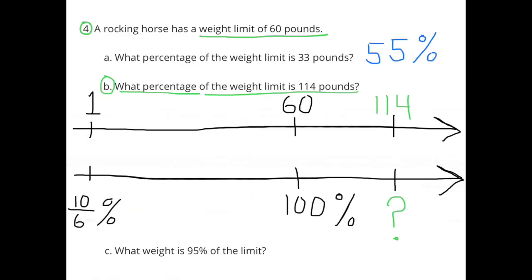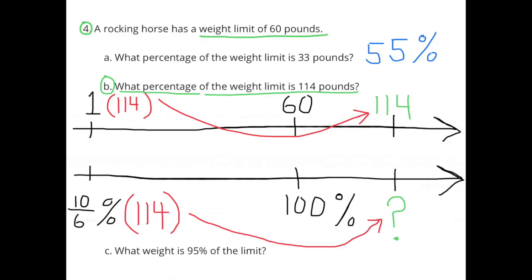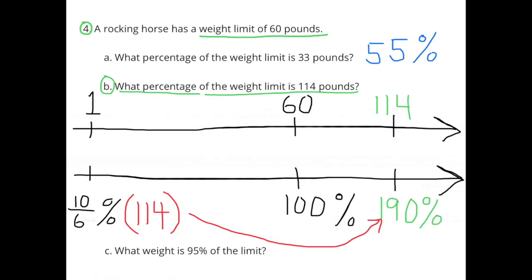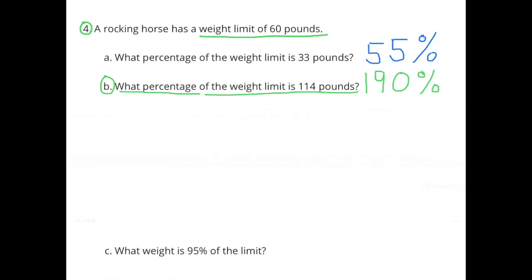I'll reuse my double number line. Since I've already divided 60 by 60 to get 1 and divided 100% by 60 to get 10 sixths percent, to find what percentage of the weight limit is 114 pounds I multiply 1 times 114 to get 114 pounds, and I multiply 10 sixths times 114, which gives 190%. So 114 pounds is 190% of the 60-pound weight limit.